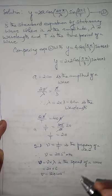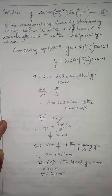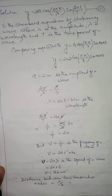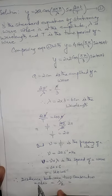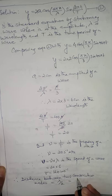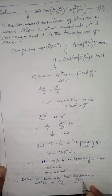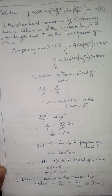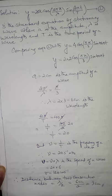The next thing to calculate is the distance between two consecutive nodes. The distance between two consecutive nodes is always λ/2. Since λ = 6 centimeters, the distance is 6/2 = 3 centimeters.